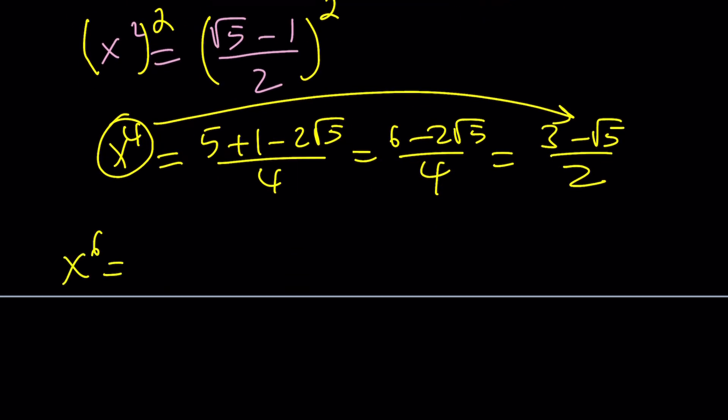And to find x to the sixth power, you can either cube that expression, but there's an easier way to do it. Just multiply x to the fourth by x squared. We already know what x to the fourth power is. And we also know what x squared is, remember, before we squared it. And then just distribute these. And at the end, after simplifying pretty much everything, you're going to end up with root 5 minus 2. Because you're going to get a lot of terms and simplify. That's going to be the answer.